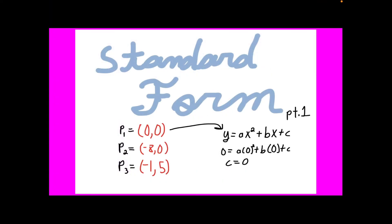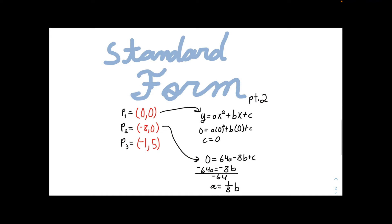Okay, so for my standard form equation, I chose three points: 0, 0, negative 8, 0, and negative 1, 5. And I plugged it into the quadratic formula and I got c equals 0. For the next step, I plugged another point into this formula again, but I made c equals 0. And in that, I found that a equals 1 over 8b.